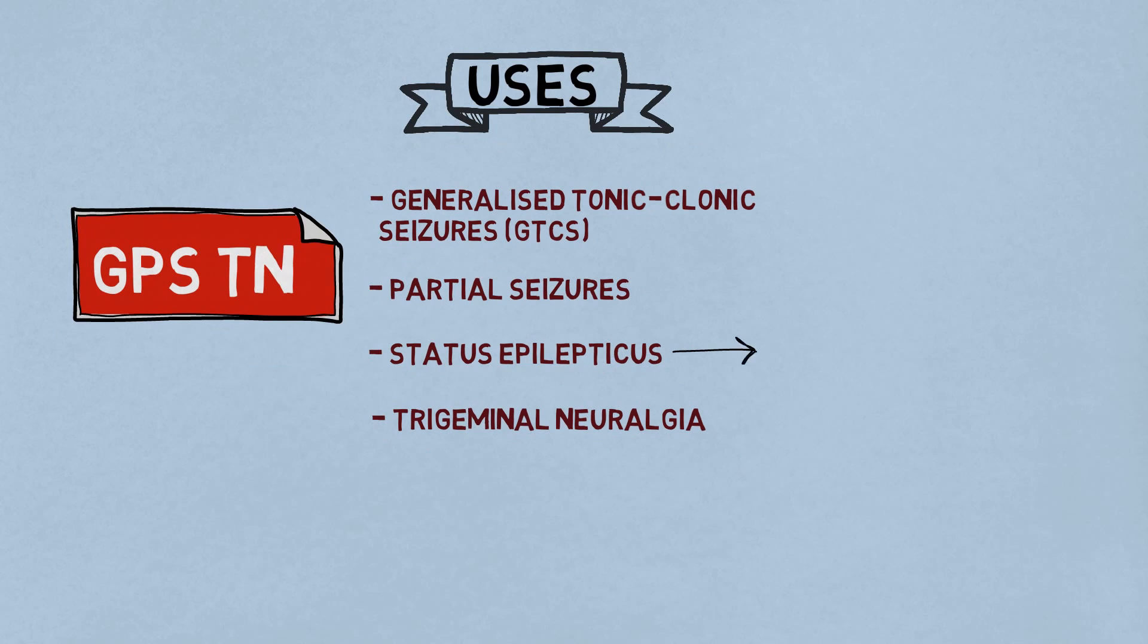Remember, we use phenytoin for status epilepticus only when fosphenytoin is not available. And also, for trigeminal neuralgia, phenytoin is second choice of drug to carbamazepine.